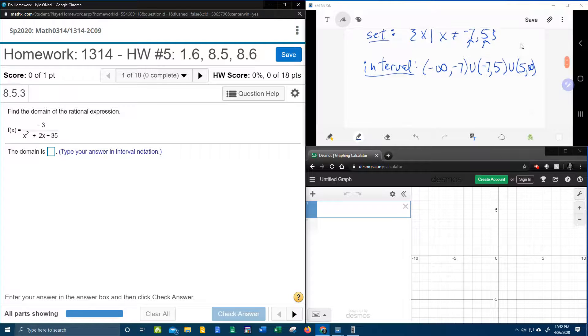So this is the way to say everything except negative 7 and 5 in interval notation. The parenthesis here says not including negative 7. Up to negative 7, but not including negative 7. And then up to 5, not including 5.